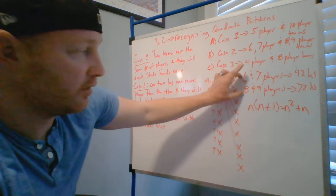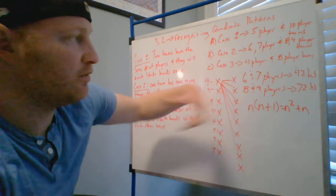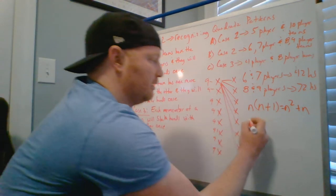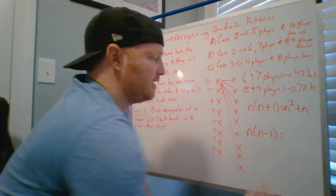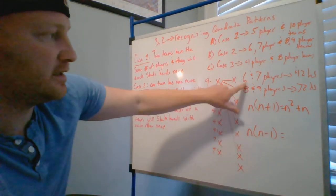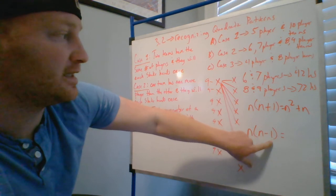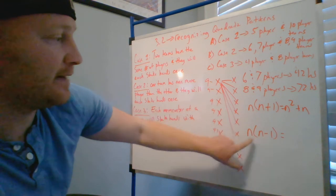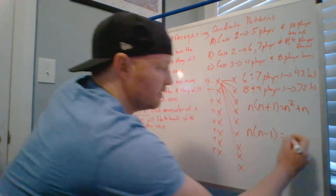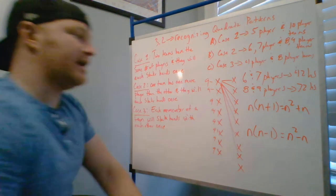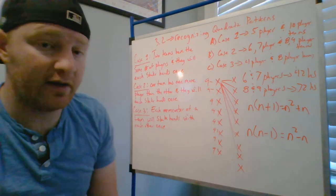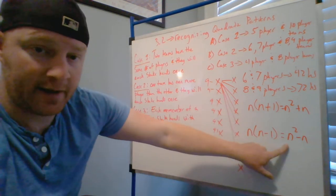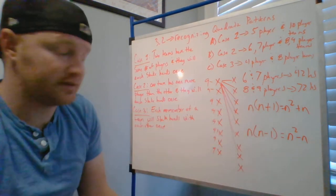Alternatively, if you look at it from the larger team's perspective — say seven players as your base n — you can write n(n−1): seven minus one is six, six times seven is 42. Double-check: nine minus one is eight, eight times nine is 72. Both work. If you see it as lower to higher use n(n+1); if higher to lower use n(n−1). You'll see examples like this in today's work.